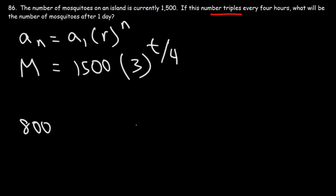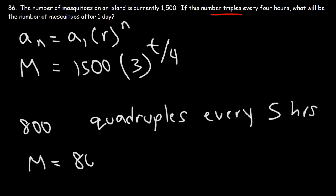The way you would design the equation, it would be something like this: M would equal 800—that's the initial amount. It quadruples, so the growth rate is four, and it does so every five hours. So we're going to raise it to t over five. And so that's how you could solve problems like this. That's how you could set up the equation which will help you to get the answer.